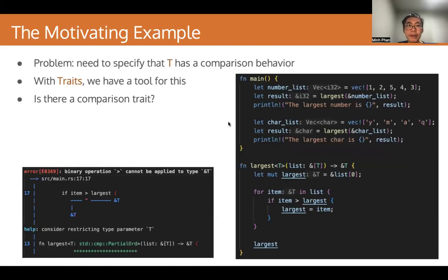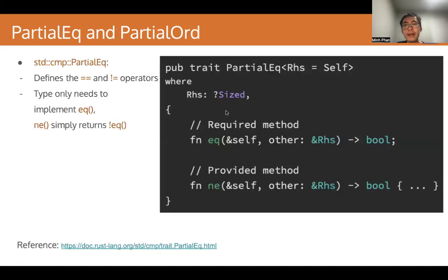Now let's go back to the motivating example. The problem we talked about is that we needed to specify that T, the type in the largest function, has a comparison behavior. Now we have a tool for this — we need a trait that is able to define a comparison behavior. Is there such a trait in Rust? The answer is yes. First, we have the PartialEq trait. This trait defines the equal and not-equal operators. We have a required method, eq, and a provided method ne for not-equal. Any type implementing this trait only needs to implement eq — the ne method simply returns the negation of eq.